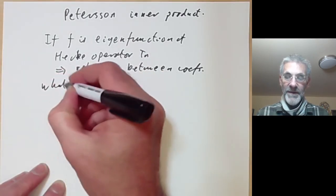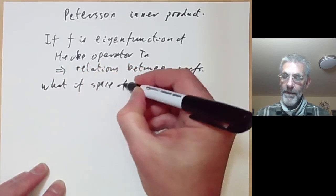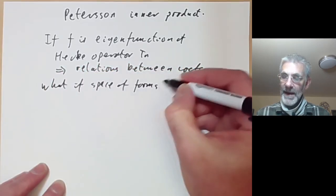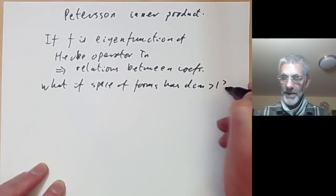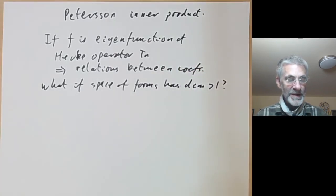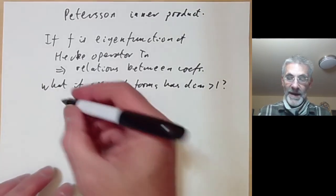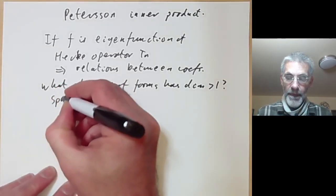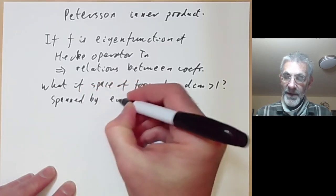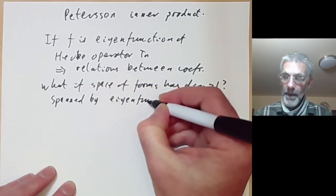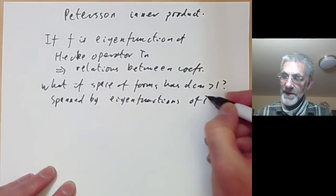Now we ask: what if the space of forms has dimension greater than one, which it usually does? What we want to show is that in this case it is still spanned by eigenfunctions of the operators T_n.